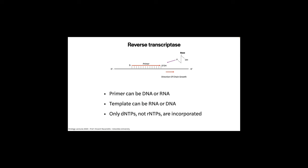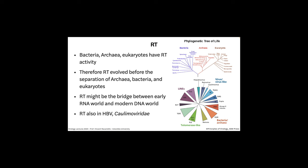The enzyme reverse transcriptase has a few key properties. It is primer-dependent; the primer can be DNA or RNA. The template can be DNA or RNA — to go from RNA to single-stranded DNA, the template is RNA; then to make it double-stranded, the template is DNA. But always dNTPs, not rNTPs, are incorporated. Deoxynucleotide triphosphates, the precursors of DNA, are incorporated — never the precursors of RNA. The enzyme adds material in a 5' to 3' direction and reads the template in a 3' to 5' direction.